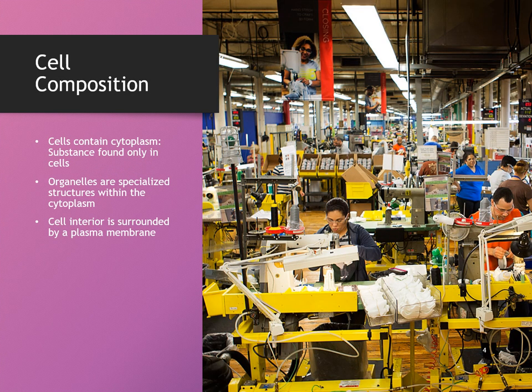The cell is composed of three main parts: the plasma membrane, the cytoplasm, and the nucleus. The cytoplasm is kind of like a factory floor — a factory has all of its workers, equipment, and machines inside that it needs to do its job. The cytoplasm has all of the specialized structures inside the cell that the cell needs to do its job, and these are called organelles.